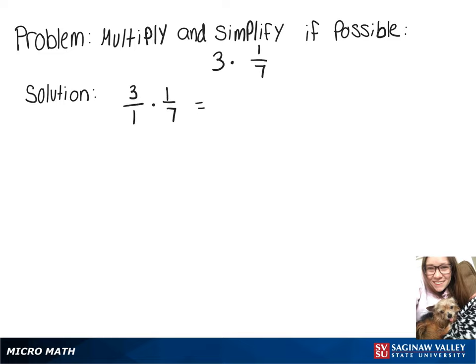Then we just need to multiply our numbers on top. So on top we'll have 3 times 1. Same on the bottom, so we'll have 1 times 7. We'll end up with 3 over 7.